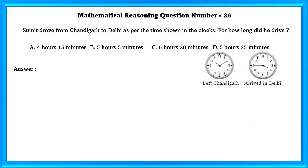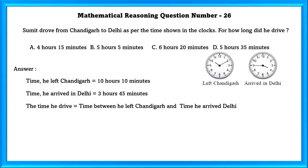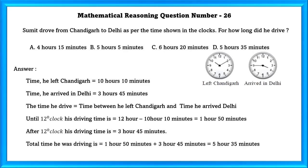Mathematical reasoning question number 26: Sumit drove from Chandigarh to Delhi as per the time shown on the clocks. For how long did he drive? Time he left Chandigarh is 10 hours 10 minutes. Time he arrived in Delhi is 3 hours 45 minutes. He drove 1 hour 50 minutes before 12 o'clock, and after 12 o'clock his driving time is 3 hours 45 minutes. Adding both gives a total driving time of 5 hours 35 minutes.